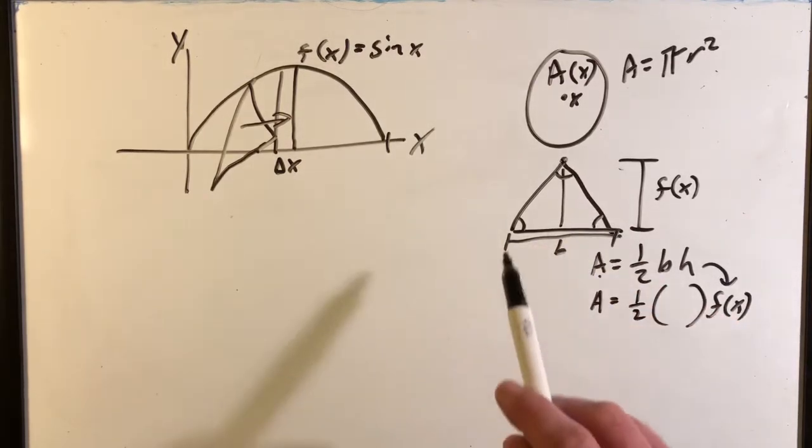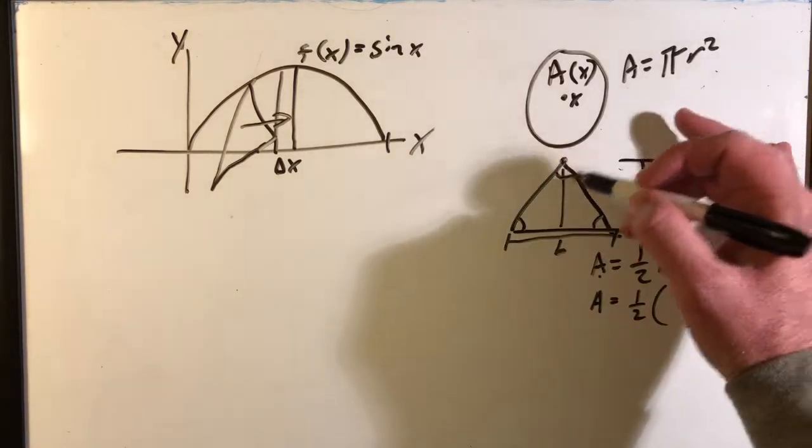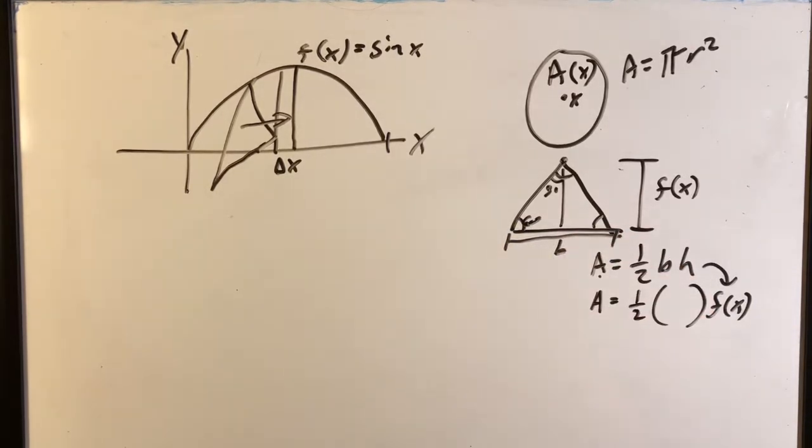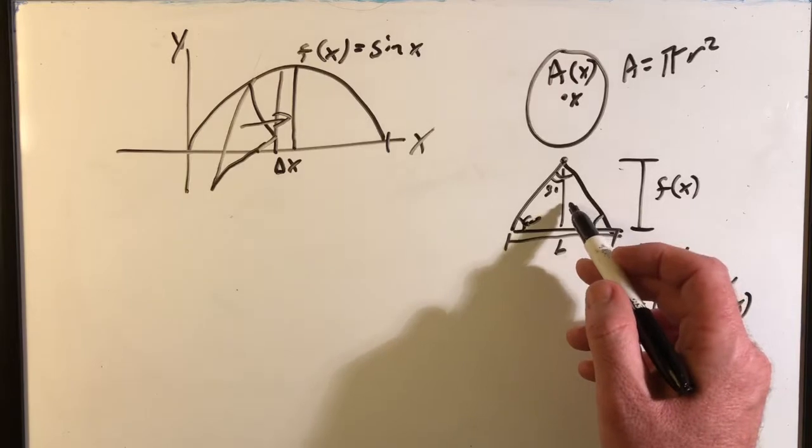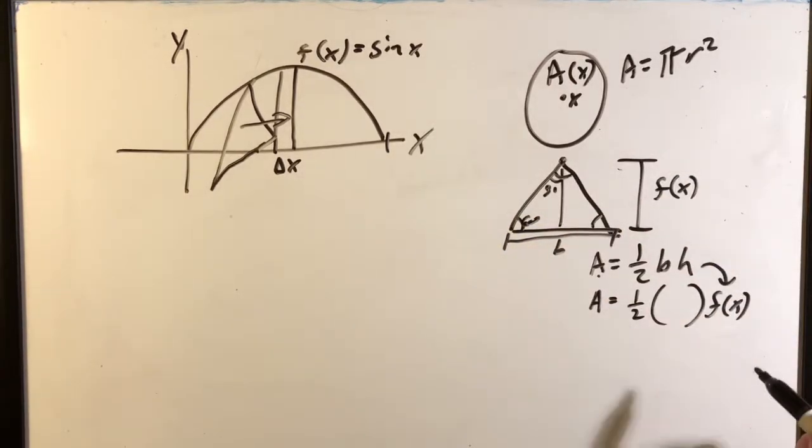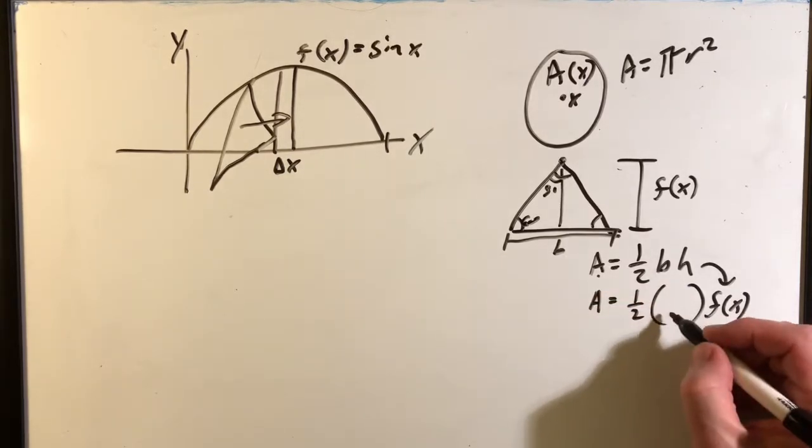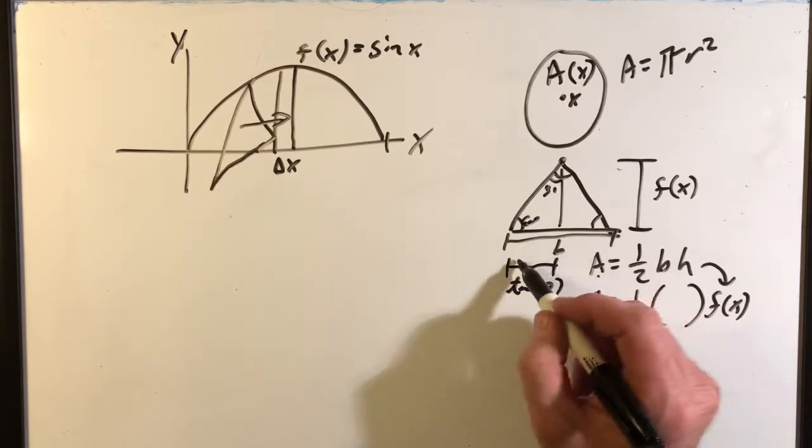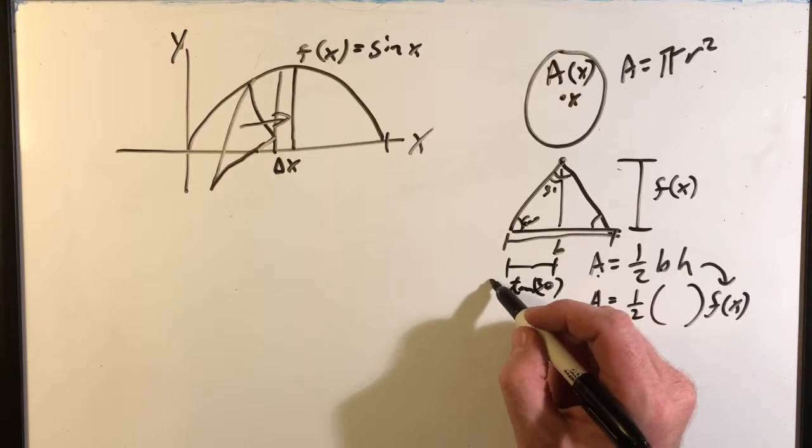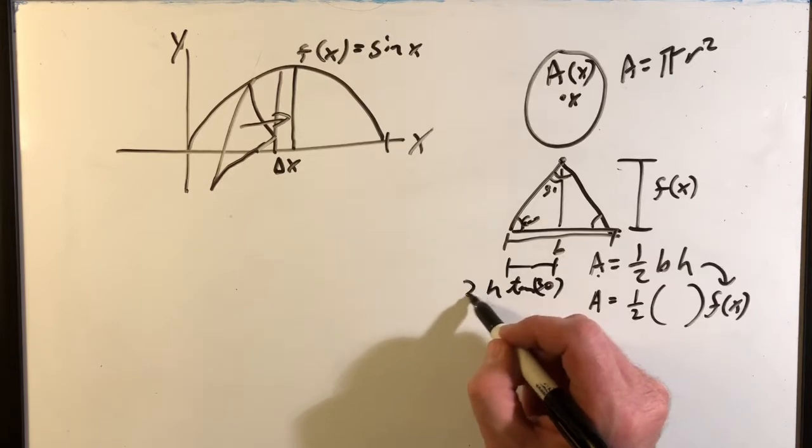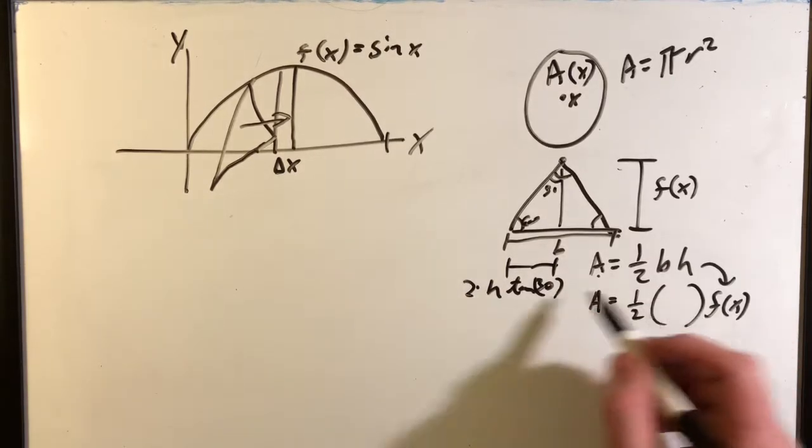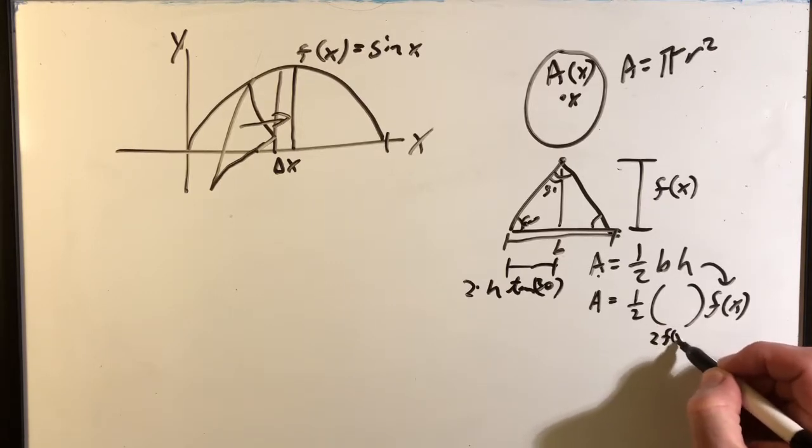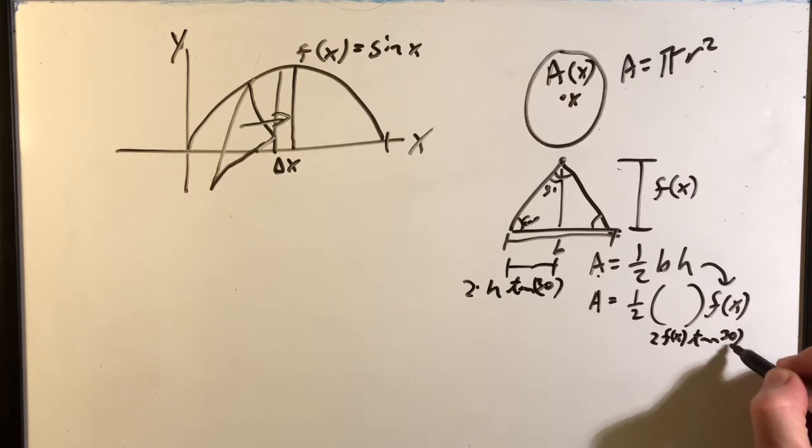And because we made it easier on ourselves where we said that this was an equilateral triangle, well then we know that this is basically going to be 30 degrees here. This is going to be 60 degrees here. So this side right here equals tangent 30, which is a constant, times h, or f of x, and then all that's times 2. So 2 times h times tangent 30 is going to be this whole base here. So base is going to be 2 times f of x times tangent 30 degrees.